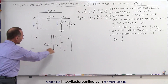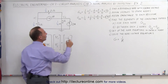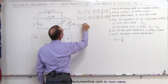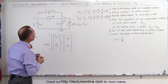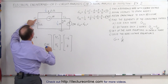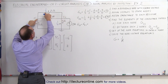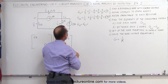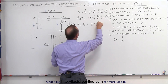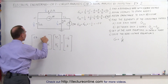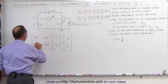Now we want to find the off-diagonal elements. G12 equals G21, which is equal to the negative value of the conductance connecting the two nodes directly. The only direct path between node 1 and node 2 is through that branch, so it's the negative of that conductance: negative 1 over 2, which equals negative 0.5. Both off-diagonal elements are minus 0.5.